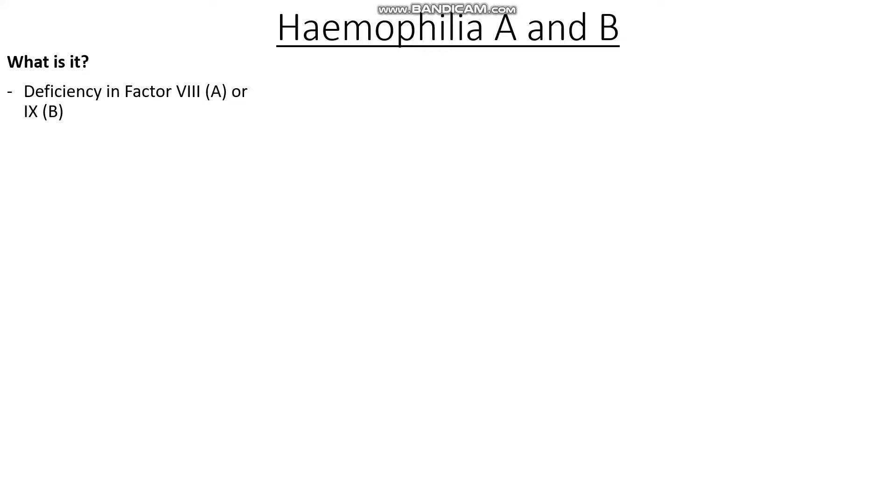What does haemophilia refer to? 'Haemo' refers to blood, and 'philia' is a likeness towards or a tendency to. Therefore, we can expect patients with haemophilia to be at a higher risk of bleeding — not only recurrent but also severe. Haemophilia is either a deficiency of factor VIII in haemophilia A, or a deficiency of factor IX in haemophilia B.